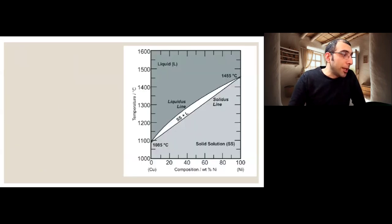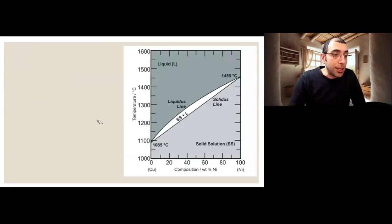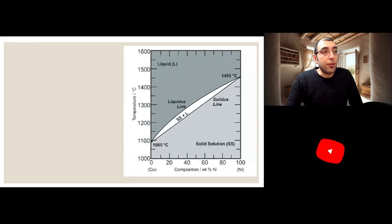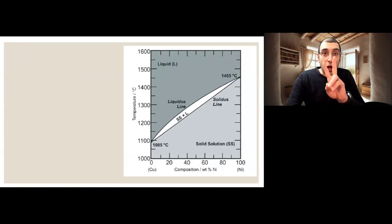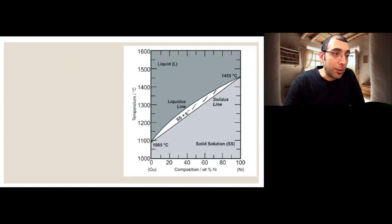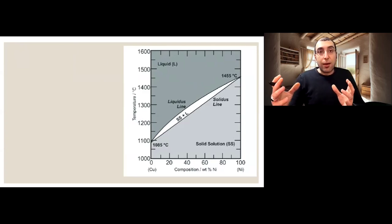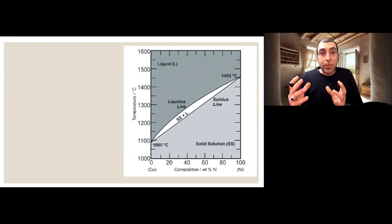We begin with a phase diagram of complete solubility. It's a phase diagram of a copper-nickel alloy with nickel at 100% on one end and 0% on the other. We have a liquid region at the top and a solid region at the bottom, and we have a two-phase region — this airfoil-shaped region in the middle — where we have solid and liquid at the same time. This is a basic phase diagram for complete solubility.